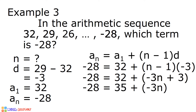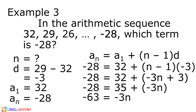Negative 28 is equal to 35 plus negative 3n. By isolating negative 3n to one side of the equation, we need to remove 35 by adding negative 35 to both sides. Negative 28 plus negative 35 is equal to negative 63. 35 plus negative 35 is equal to 0. And we have negative 63 is equal to negative 3n. We will divide both sides by negative 3. Negative 63 divided by negative 3 is equal to 21. Negative 3n divided by negative 3 is equal to n.